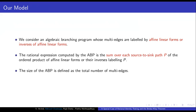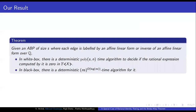Our main result is that given such a polynomial-size ABP with inverses, in the white box setting we can solve the RIT problem in deterministic polynomial time, whereas in the black box setting we can obtain a deterministic quasi-polynomial time algorithm.